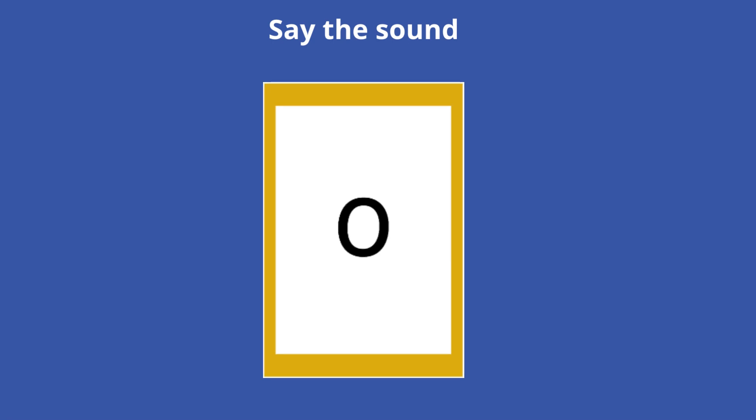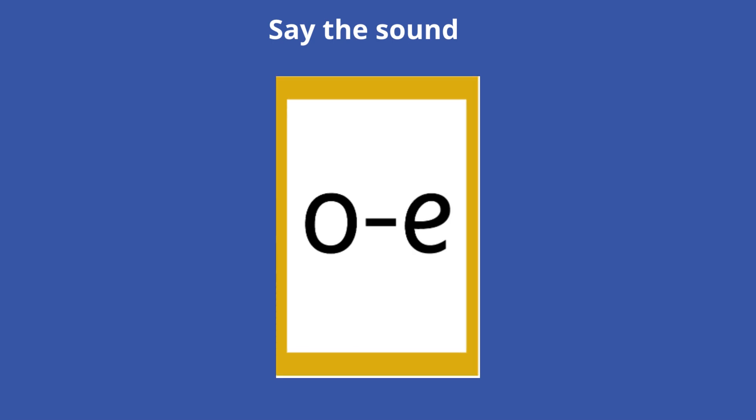They've also learnt that the letter O makes an O sound as well as an O sound. And they have also learnt about the split digraph O with the letters O and E. Again, these make the O sound in a word, but they are apart.